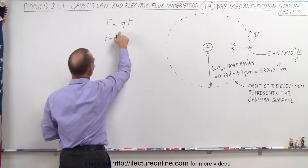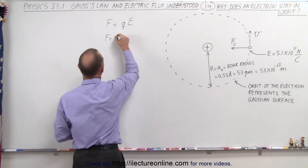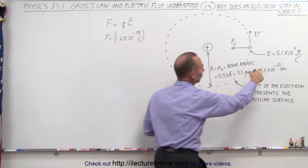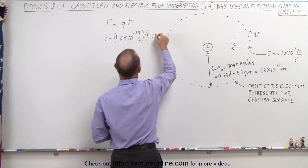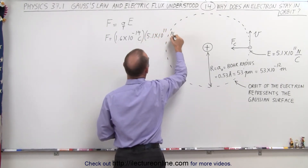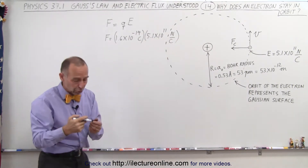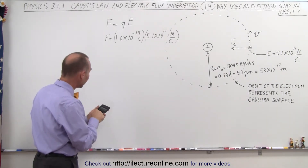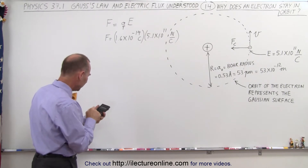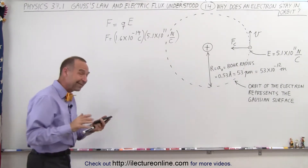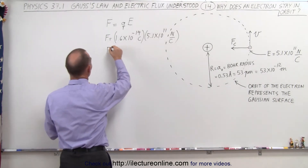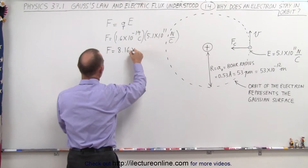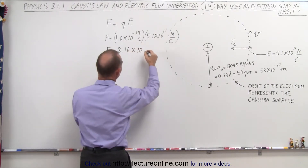The force is equal to Q, the charge of the electron, which is 1.6 times 10 to the minus 19 coulombs. The electric field, which we calculated in the previous video, is 5.1 times 10 to the 11th newtons per coulomb. The coulombs cancel out and we end up with newtons. That gives us 1.6×10⁻¹⁹ times 5.1×10¹¹, which is the force of attraction.